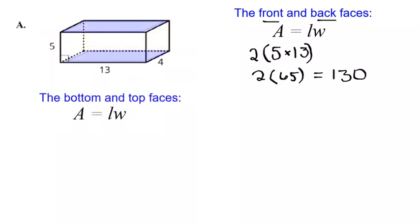So let's take a look at the top and the bottom, they're identical rectangles. They're both 13 by 4s. So 13 by 4 is 52, and two of those would be 104.